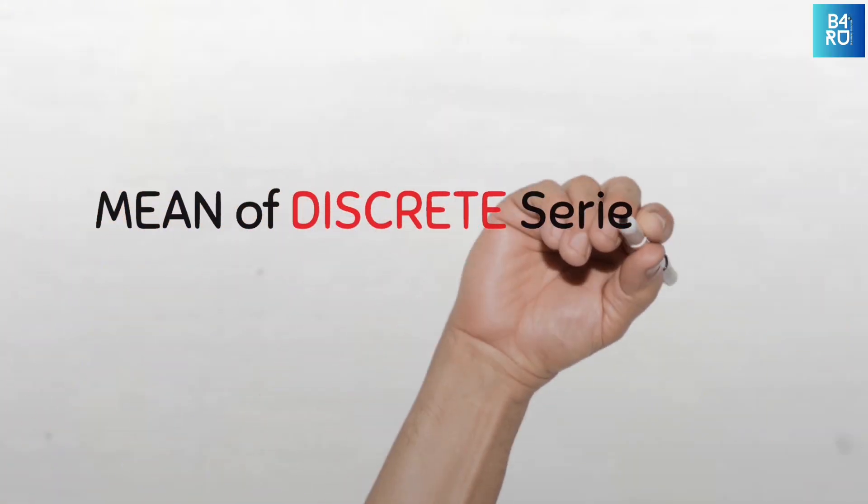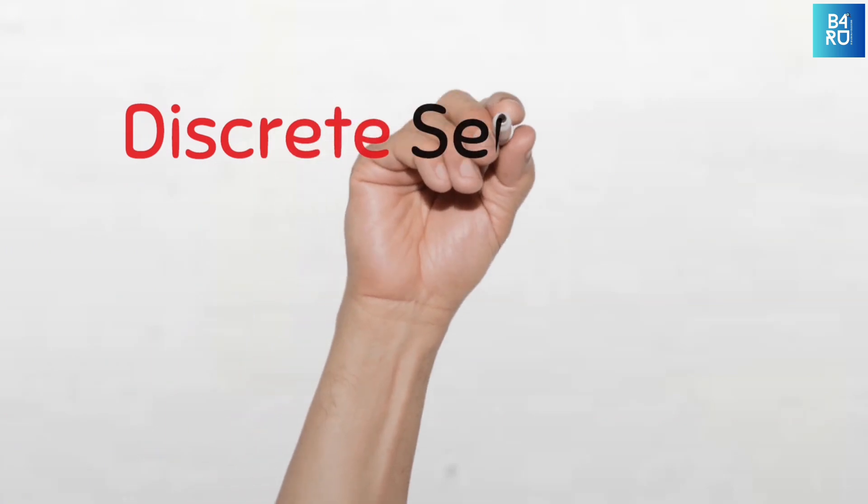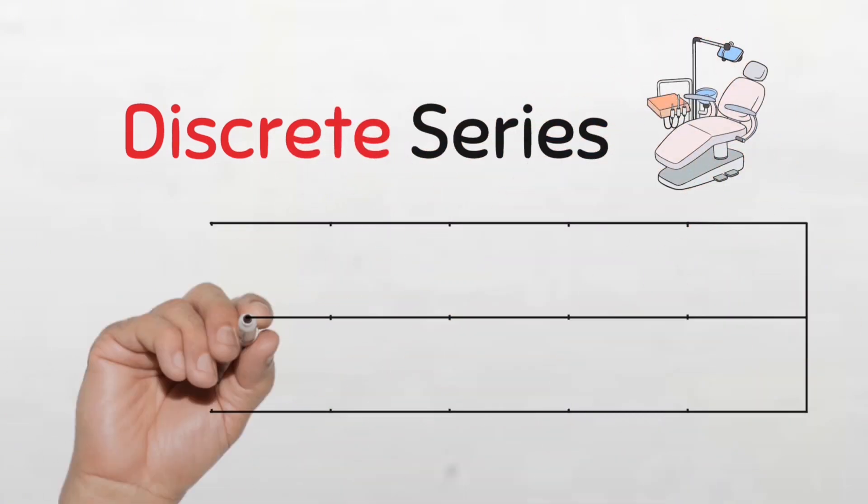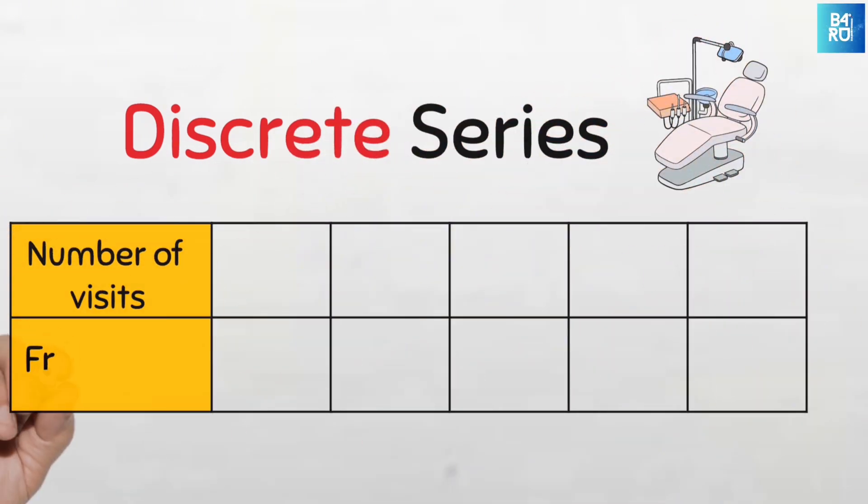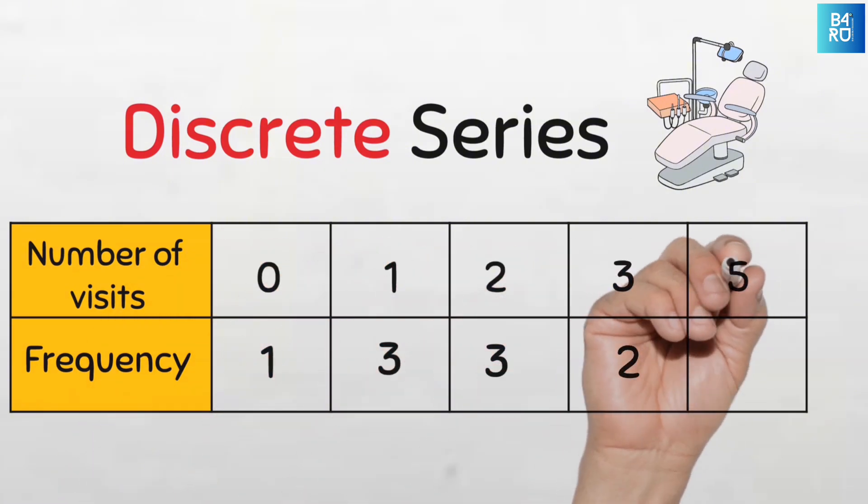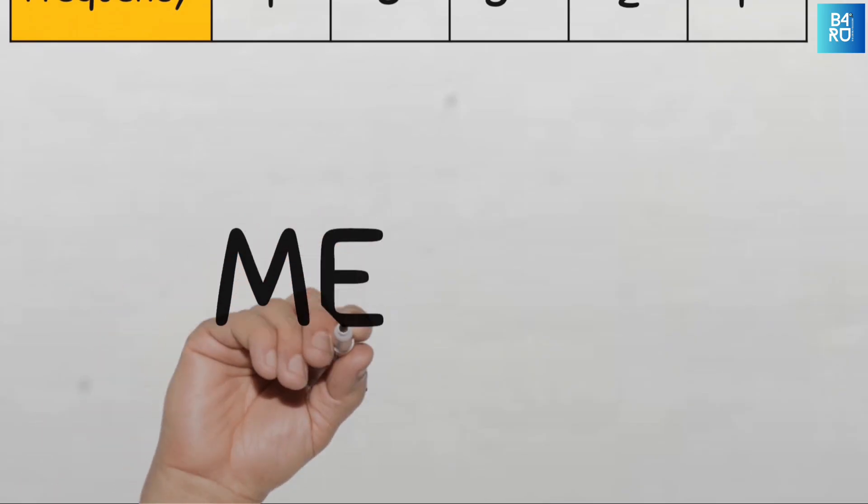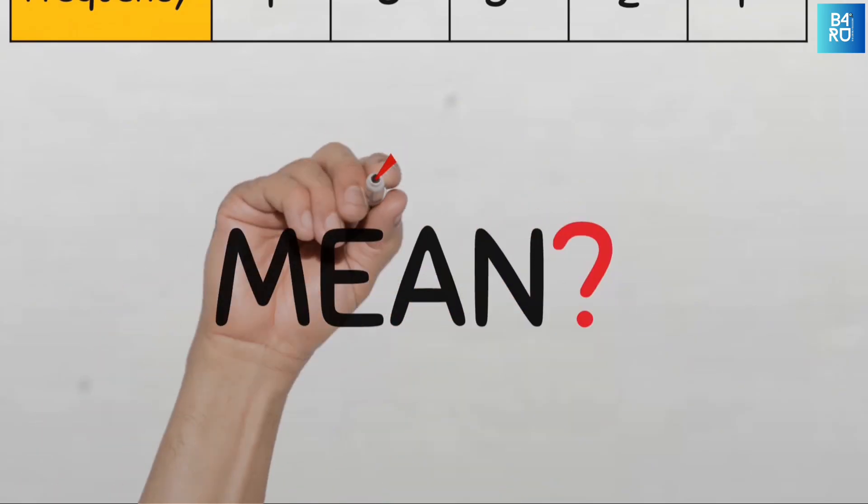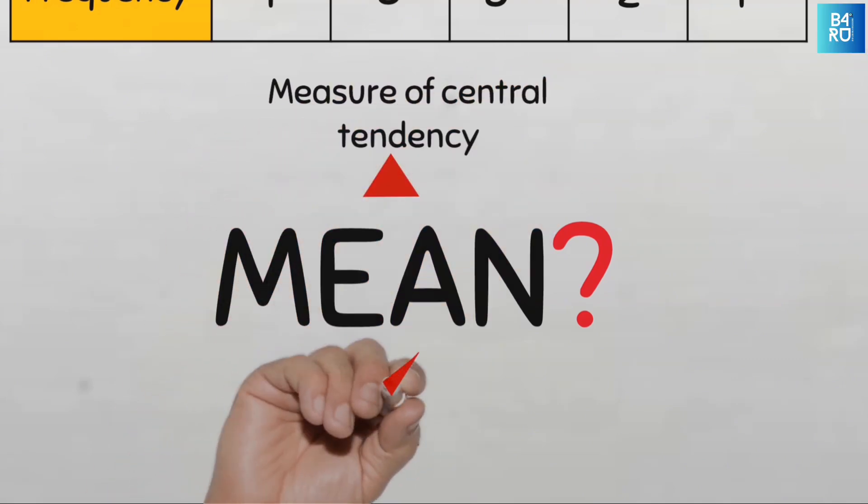The mean of discrete series data. This is a discrete series dataset on the number of dental clinics of a sample of 10 children in the last one year. We know that this is a discrete series data because we can see the variable and the corresponding frequencies. So how do we find the mean of this data? Recall that the mean is a measure of central tendency that indicates the average of the dataset. So our task here is to find the average.